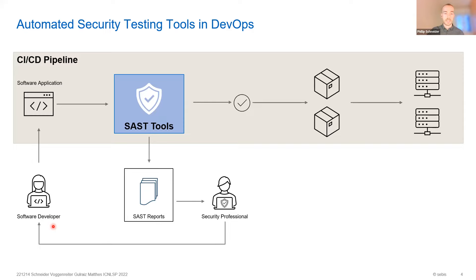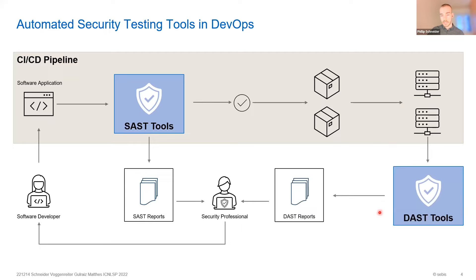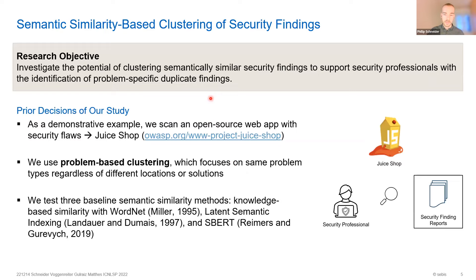In the second stage, after running the static analysis and packaging the next version of our software artifact, once it is already running on our servers, we can then also use dynamic application security testing and again generate reports that need to be analyzed by the security professionals. Here the security professional can be sometimes quite overwhelmed by the number of security findings, and we want to try using semantic similarity-based clustering to support them with identifying problems in these security reports.